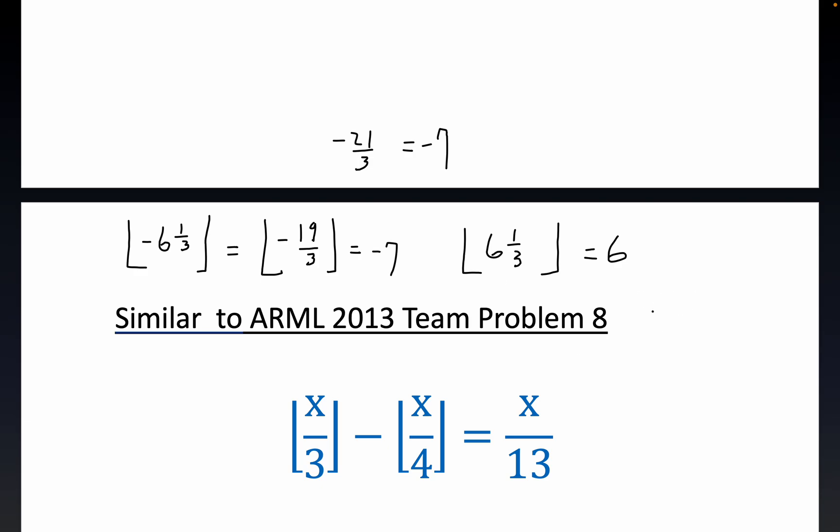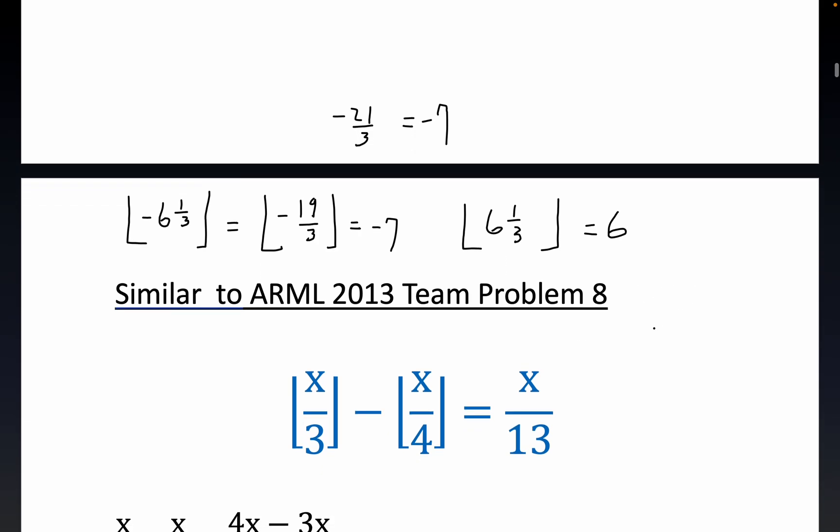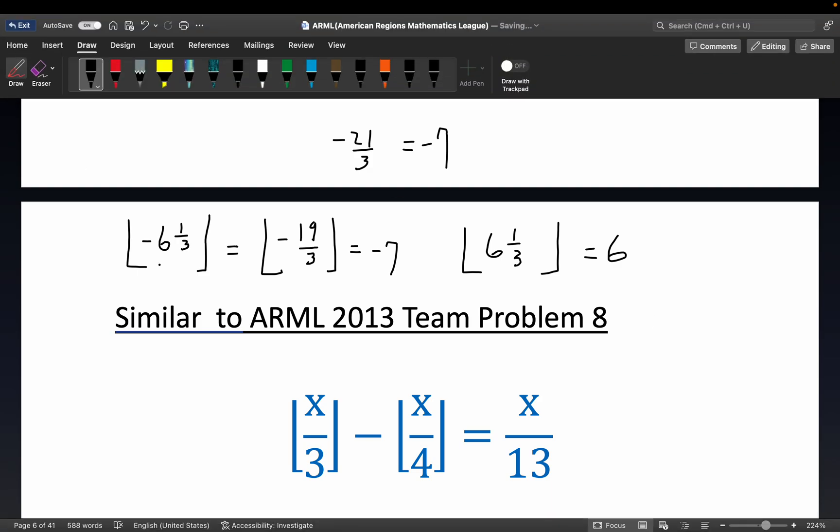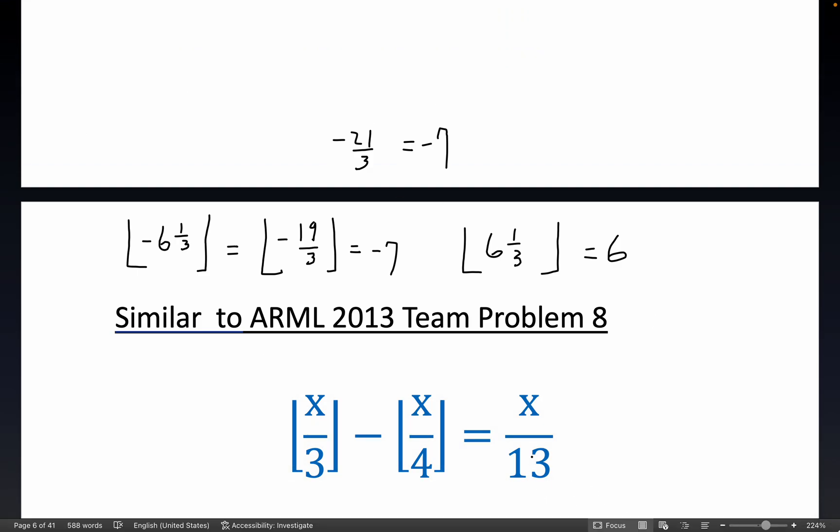Now, the key thing to realize is that the floor function always maps to an integer. It takes a real number, and it always maps to an integer. So what you have right here is the difference of two integers, which means the right-hand side has to be an integer, which means x, any solution would have to be in the form 13m, where m is an integer also. If we got any answers that weren't multiples of 13, we would have done something wrong.